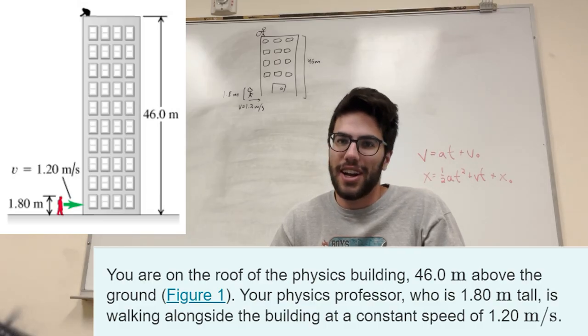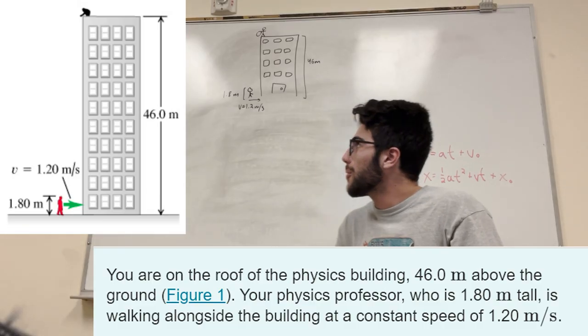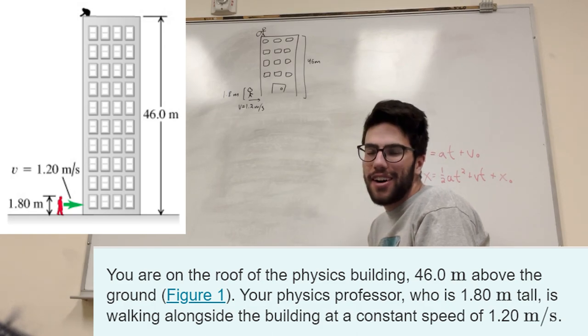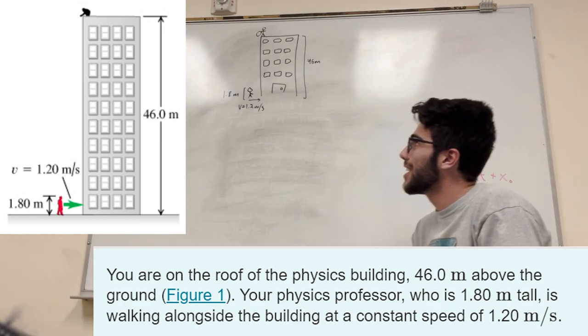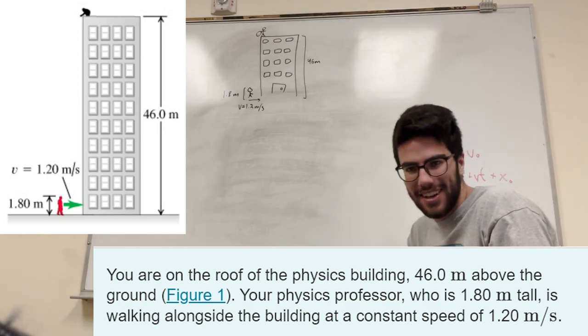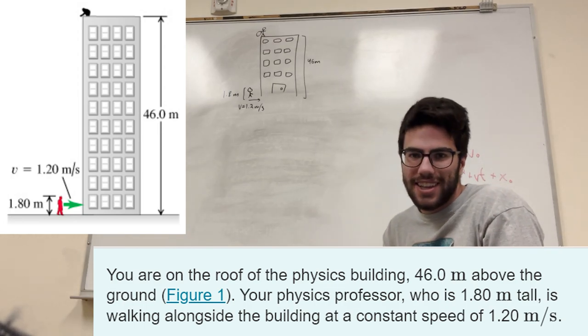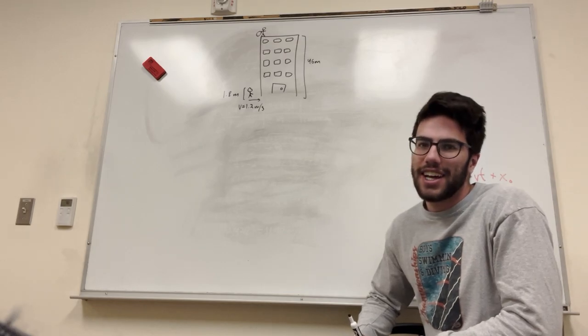What's up, Cal Gang? Alright, we got a nice physics problem on our hands. It wants us to know how far the physics professor needs to be from the building before we drop an egg in order for it to land on his head. Nice problem. I like the creativity. I give it a 10 out of 10 on creativity.